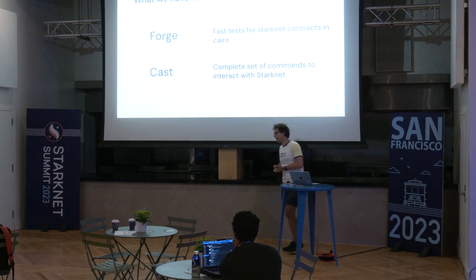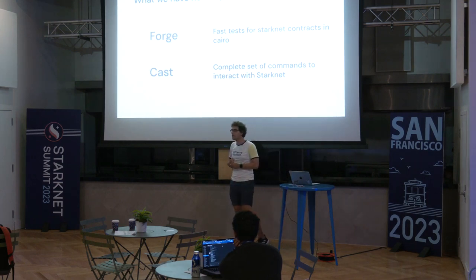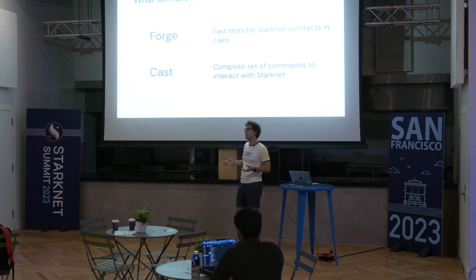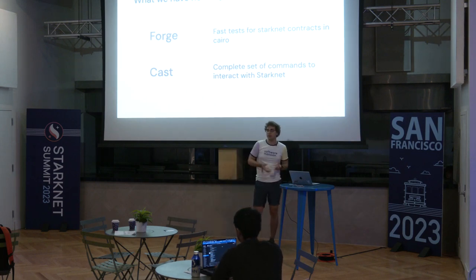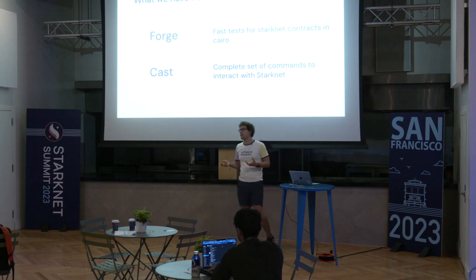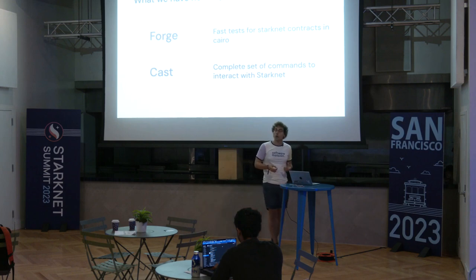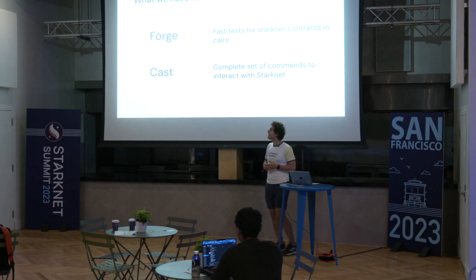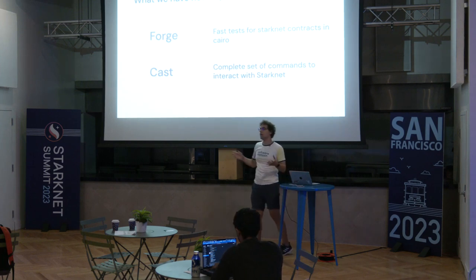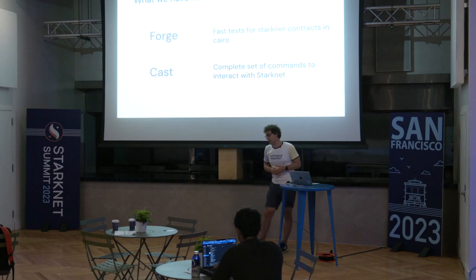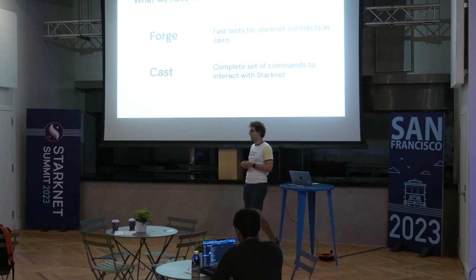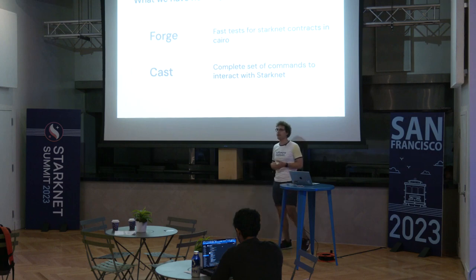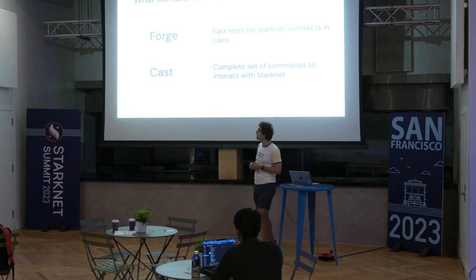As I said, it's an implementation of Foundry, but Foundry itself is a very big tool with lots of features. So I want to explain what we've achieved so far, because the project was officially released about a month and a half ago. We have two main components: Forge, which is a testing tool — essentially a test runner — for Cairo contracts. It has a lot of interesting features that can help you write better tests, and I think it's the crown jewel of the whole tool.